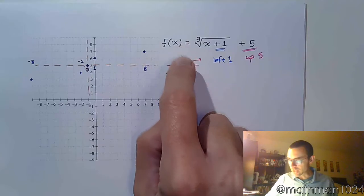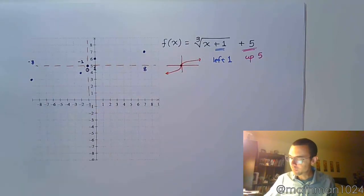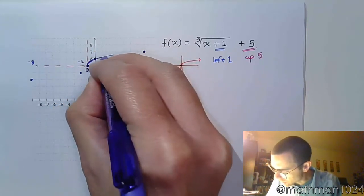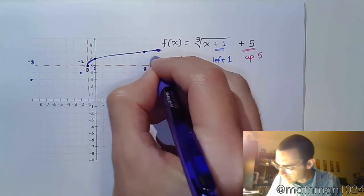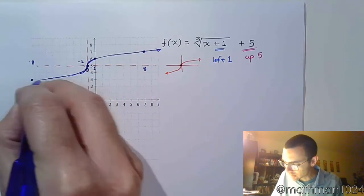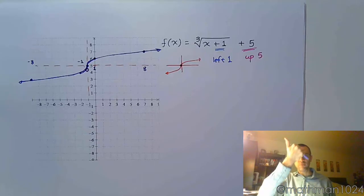I just plot those key points. I'm taking that shape. I'm taking this guy right here. I'm sliding him to the left 1 and up 5. So we now draw this shape. It's kind of vertical here in the center before it curves out. Like that. So there's your cube root shape. Shifted 1 over 5 up.